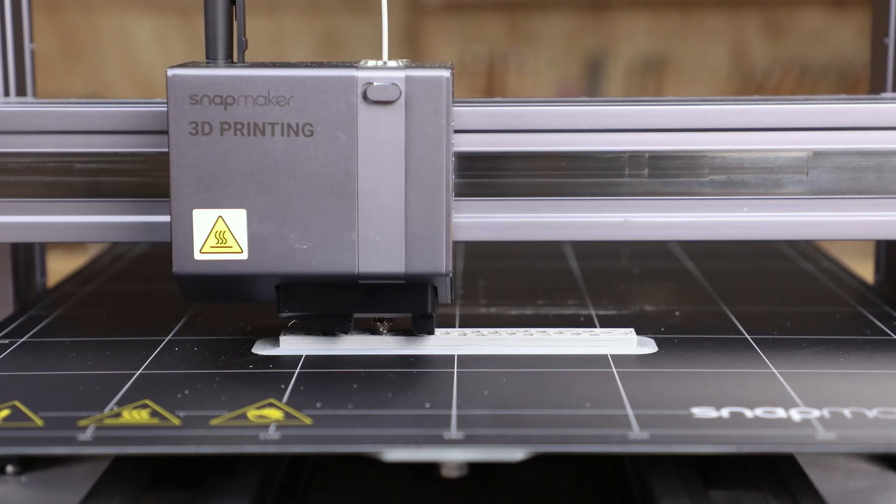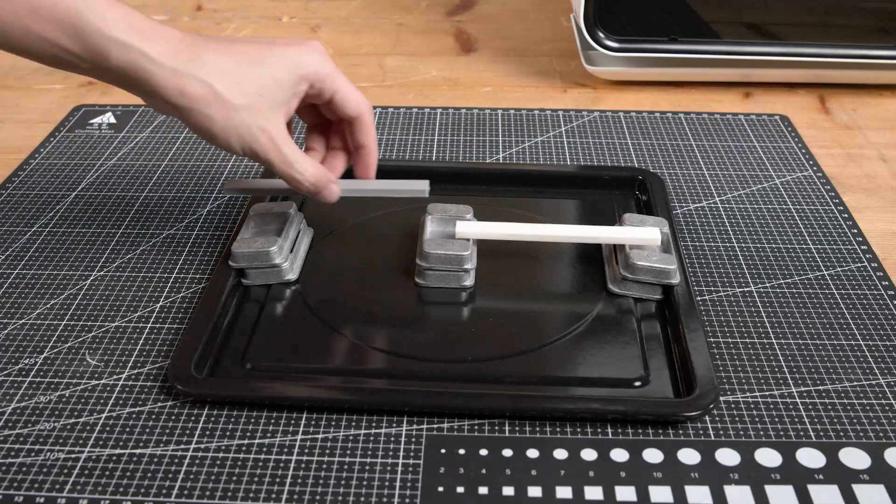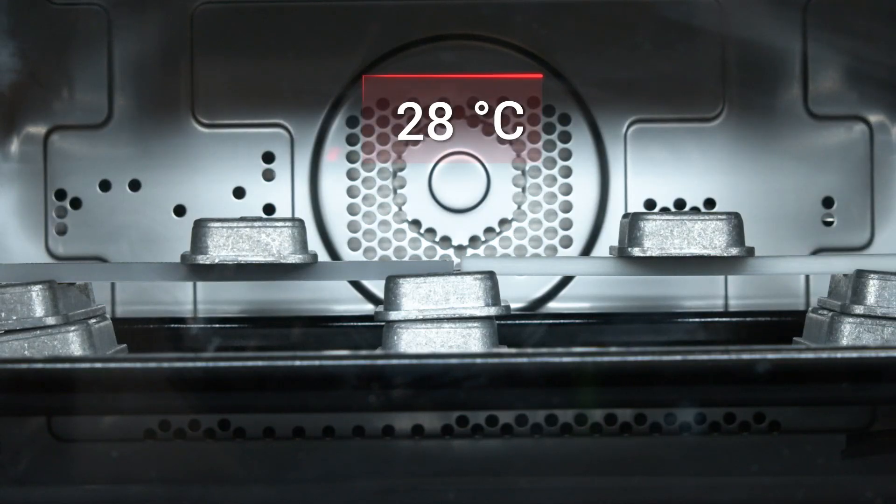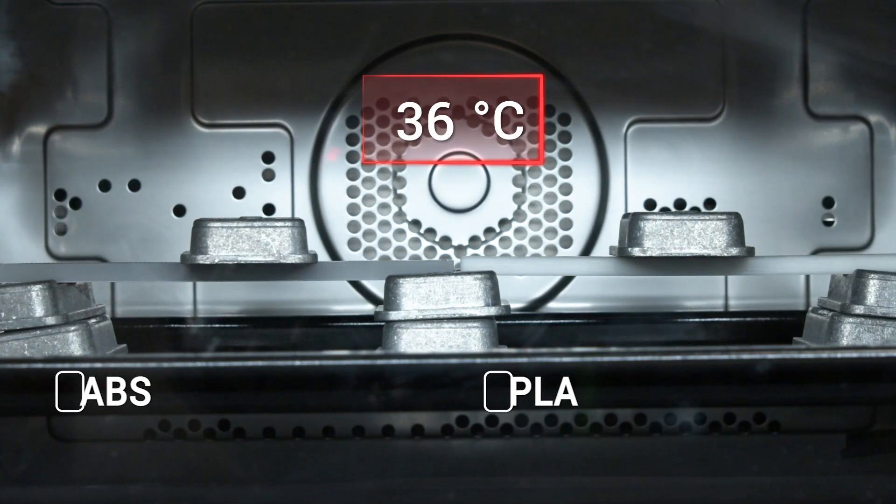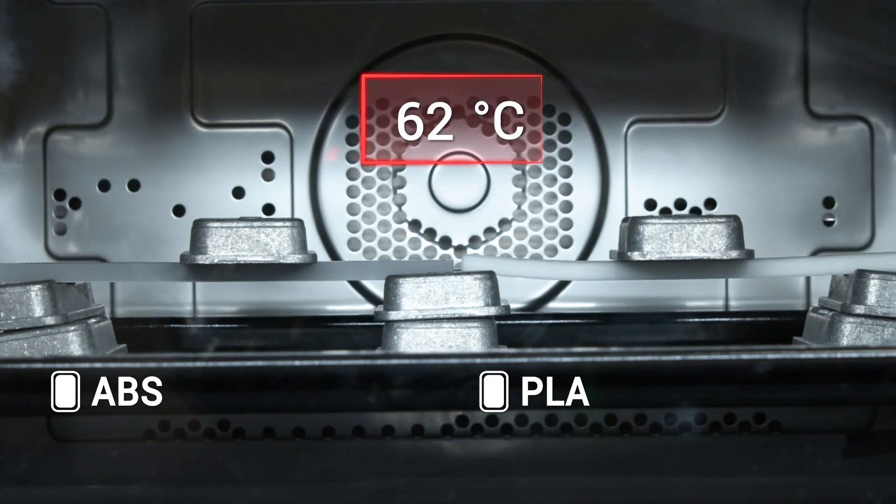To demonstrate this, let's print two strips with PLA and ABS, and put them into an oven. Set the temperature at 100 degrees Celsius, and see what happens. We can see that PLA softens gradually as the temperature increases, while ABS has no obvious change.